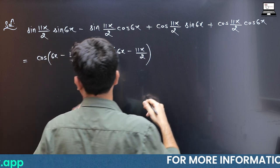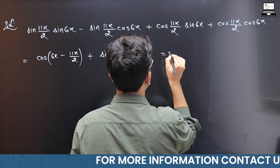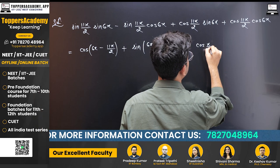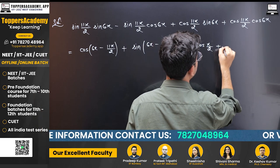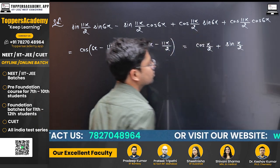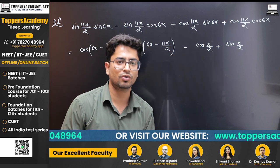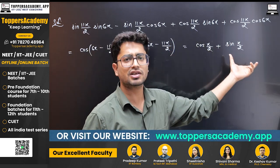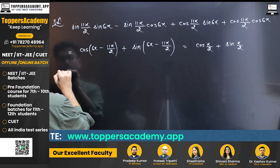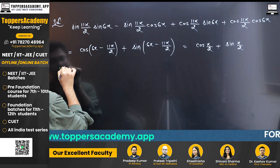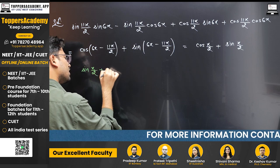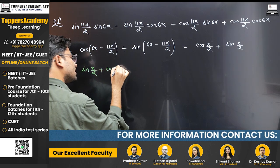So this expression equals sin(12x − 11x)/2 ... wait, simplified it gives cos(x/2) plus sin(x/2). So the whole expression reduces to sin(x/2) + cos(x/2).